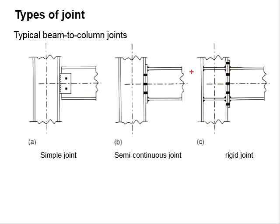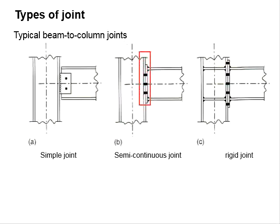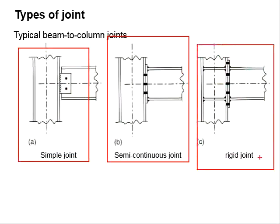Sometimes, stiffeners may be provided at the column in order to strengthen the resistance of the column. As for the semi-continuous joint, the connections are not as heavily reinforced, and the connections are expected to transfer partial of the moment to the column. Its response will be somewhere in between the simple joint and rigid joint.